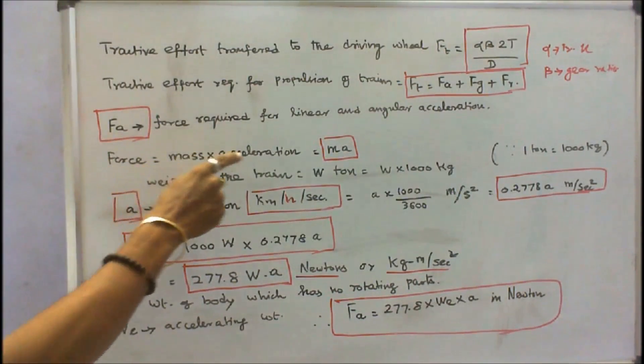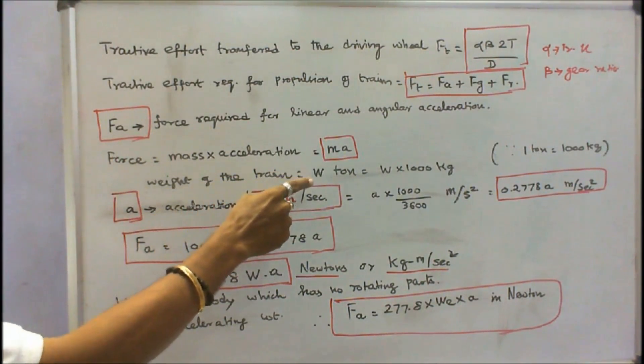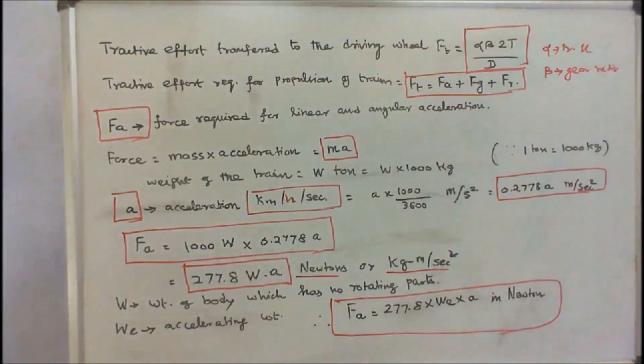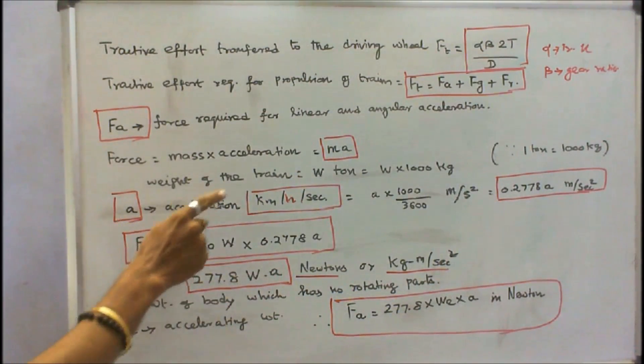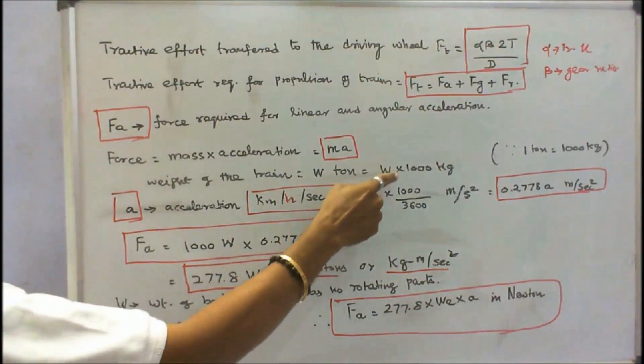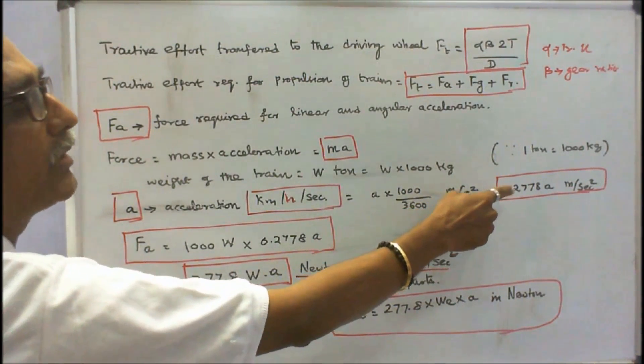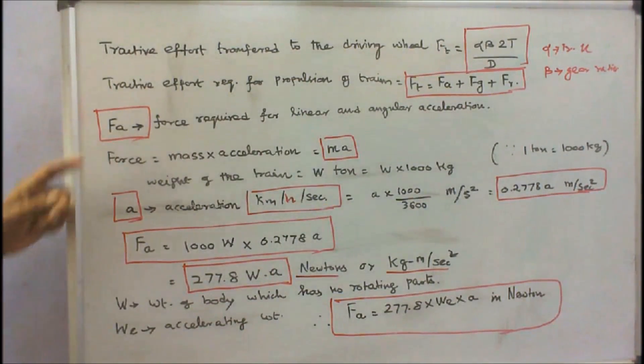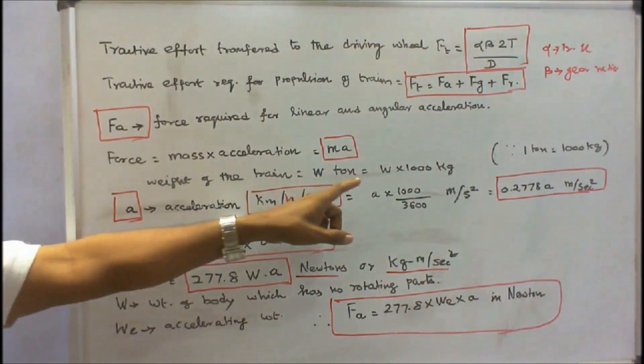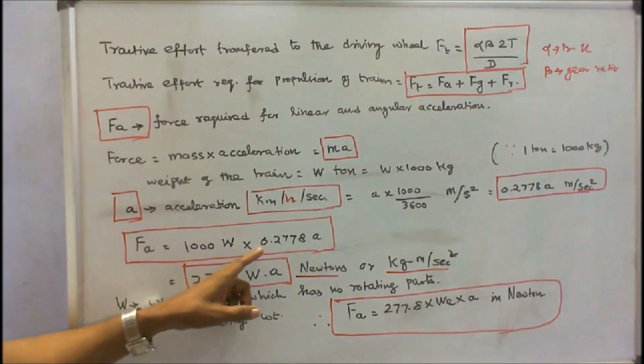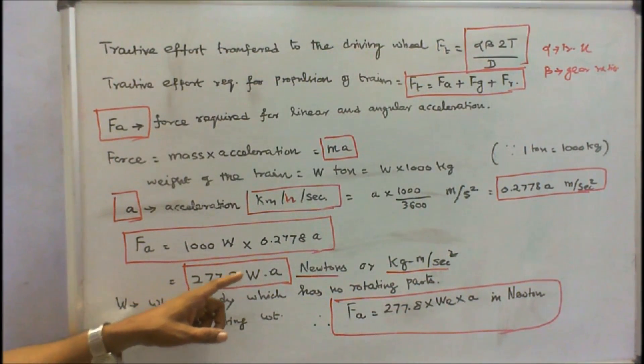First we have to find FA. FA is equal to force equals mass into acceleration. The unit of acceleration is meter per second square. Here the weight of the train is given W tons. One ton is equal to 1000 kg. Therefore weight of the train is equal to W into 1000 kg. Here acceleration is given in kilometer per hour per second, that is equal to A into 1000 divided by 3600 meter per second square, that is equal to 0.2778 into A meter per second square. Therefore FA equals mass into acceleration, that is W into 1000 into 0.2778 into A, that is equal to 277.8 into W into A newtons.